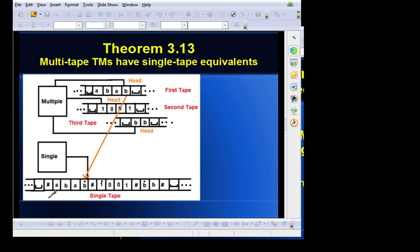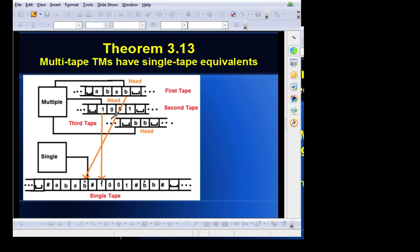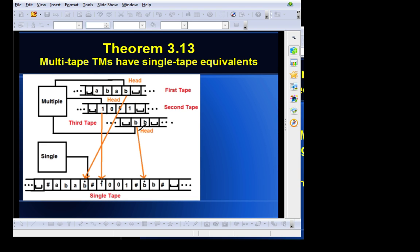If you notice there on the single tape, each section is separated by pound signs, which Sipser used to help differentiate between each individual tape that is merged into the single tape. The little dots you see above here correspond to the head on each tape where it's currently at. So, the second tape head corresponds to 1, and the third tape head corresponds to B in the third section.